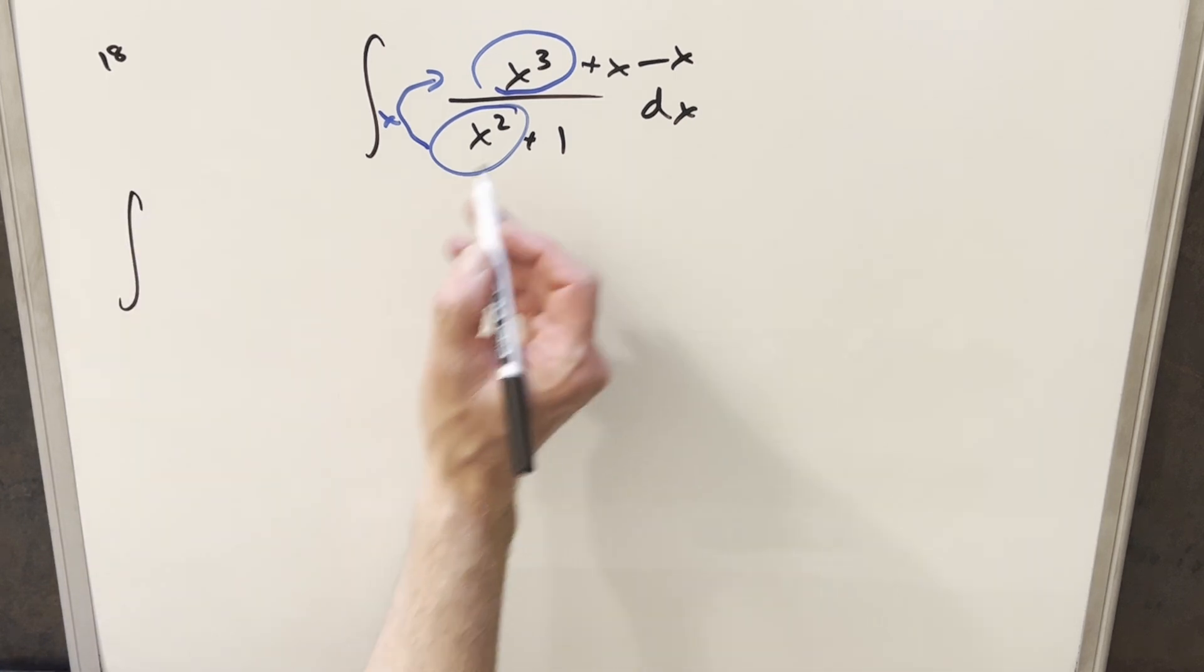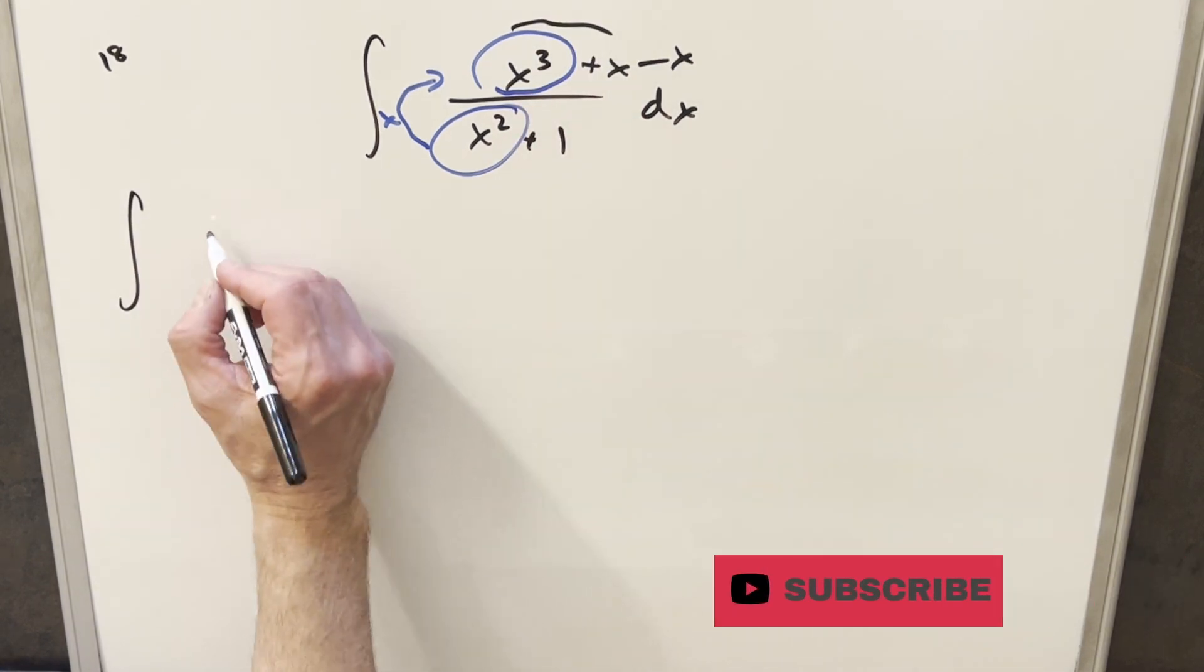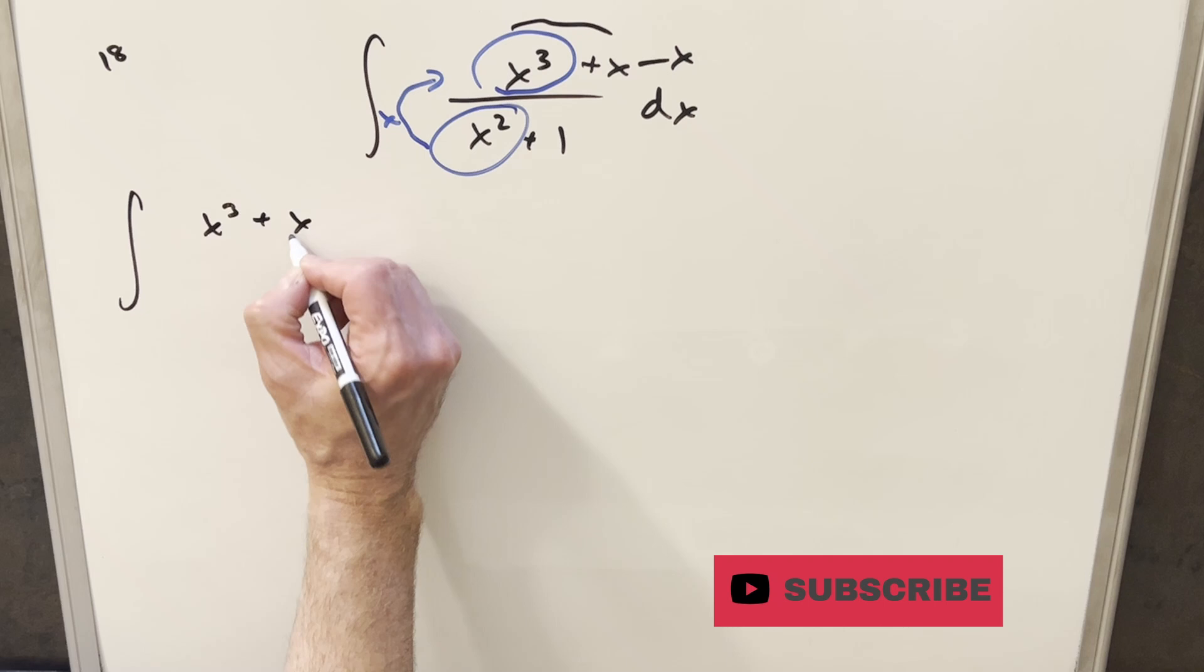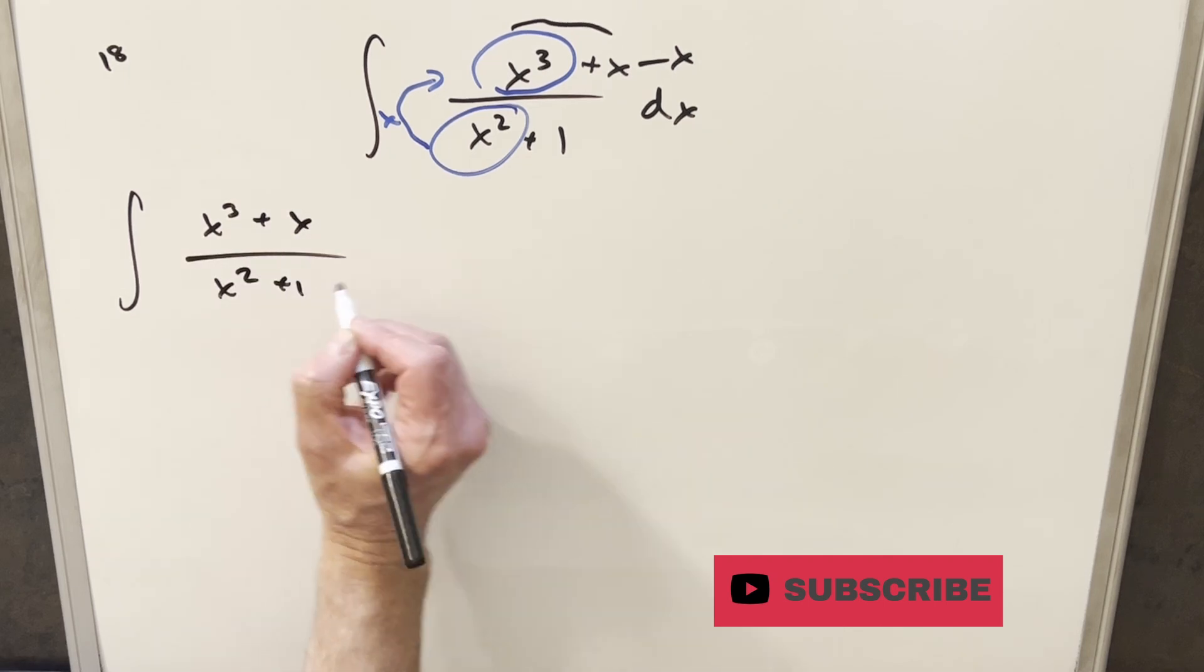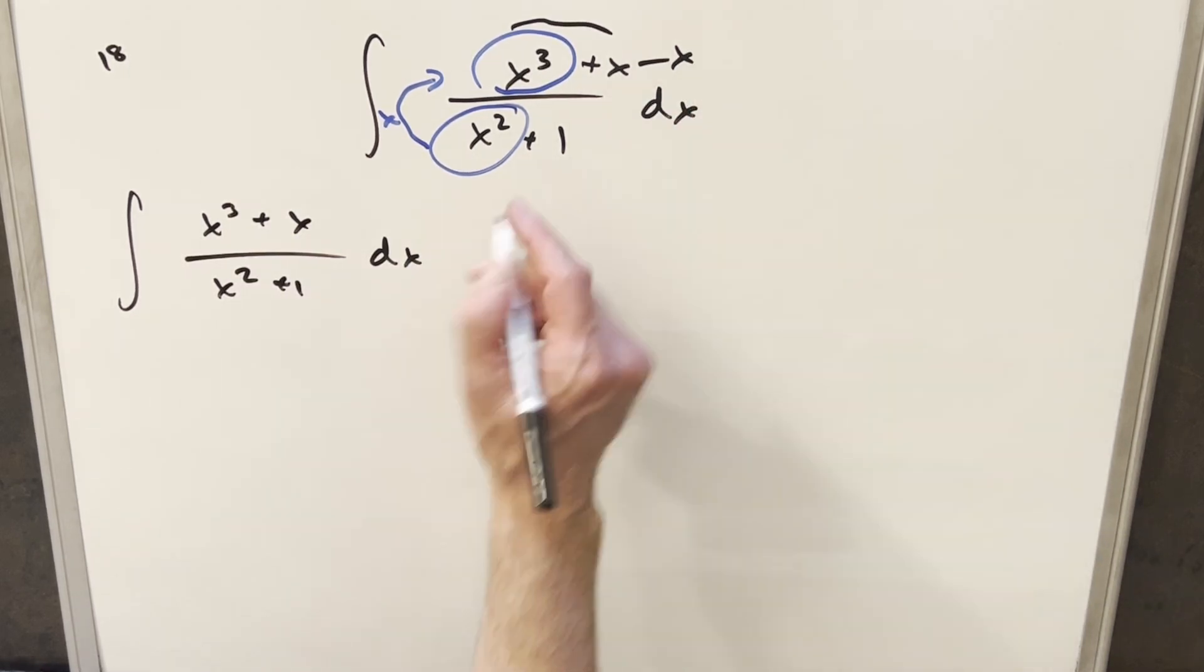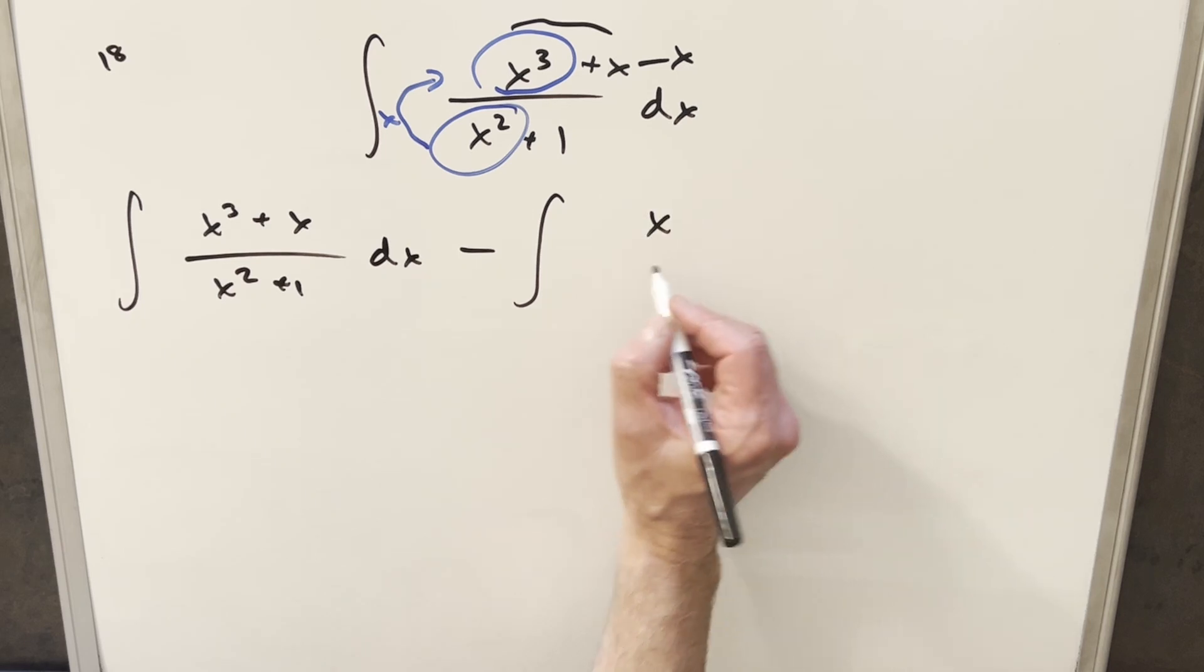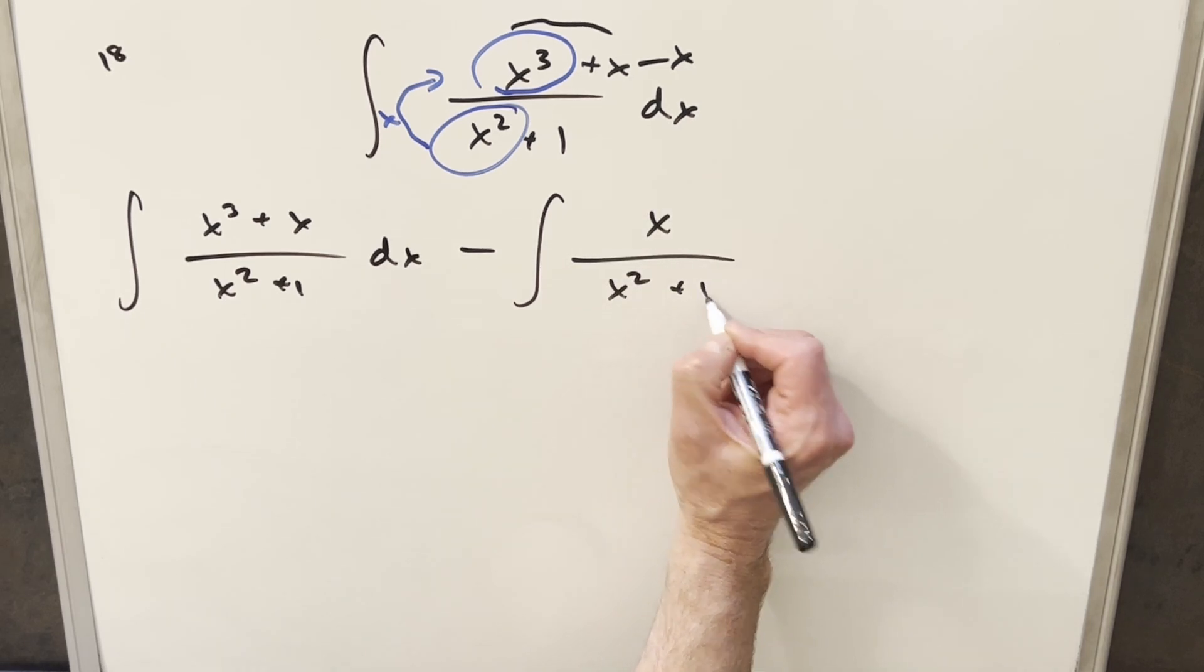And then we'll just go ahead and we can break this up into two integrals. So the first one will just be this piece. We'll have x cubed plus x over x squared plus 1 here. And the second one, we'll just use this minus x. We'll bring the minus out front, and we'll have x over x squared plus 1.